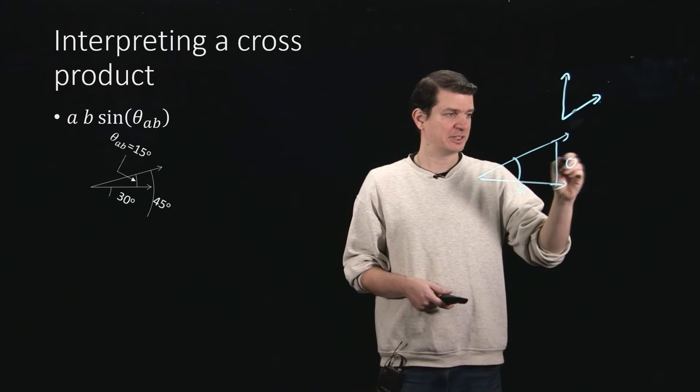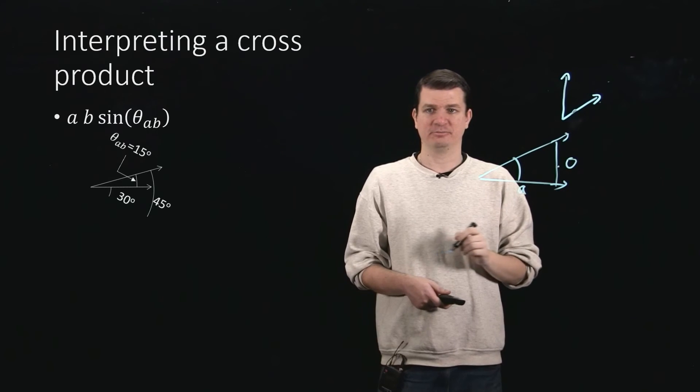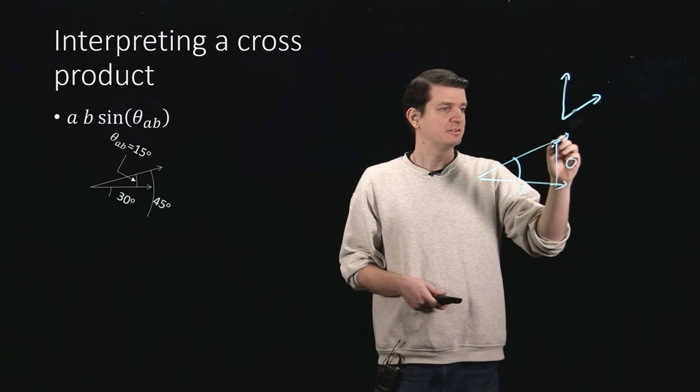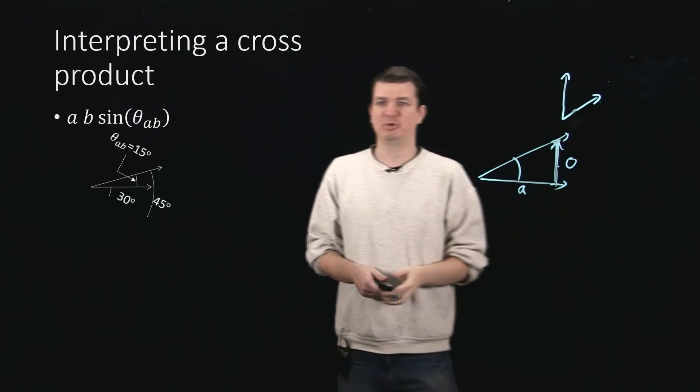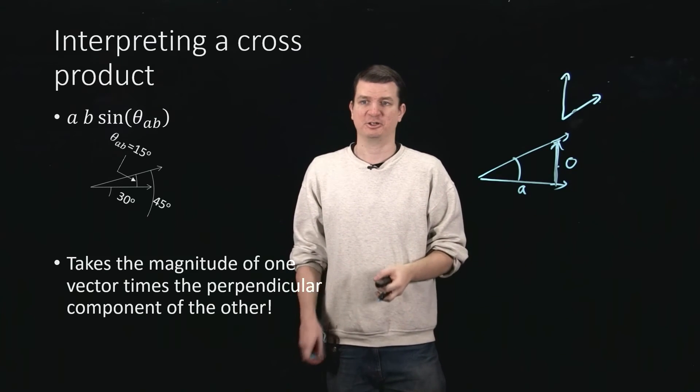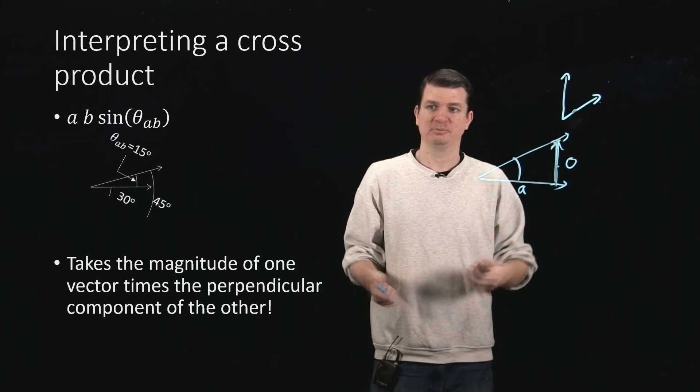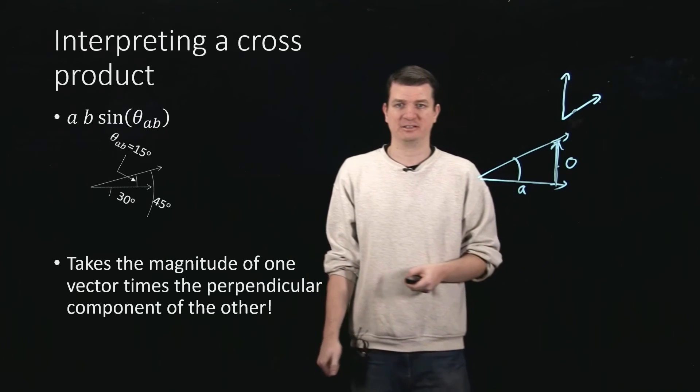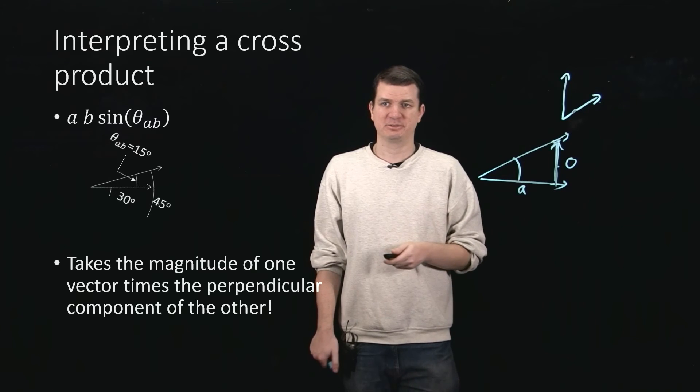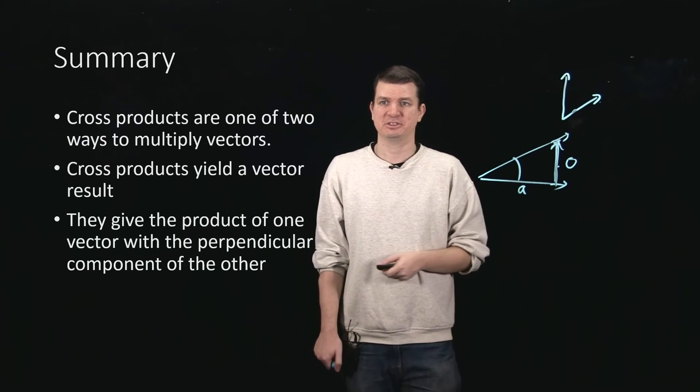But of course, I can look at the opposite side. That's the sine. So the sine is giving me this component of my vector. It's actually talking about the component of the vector perpendicular to the other vector in the cross product. And that provides us with a key way of approaching these questions.